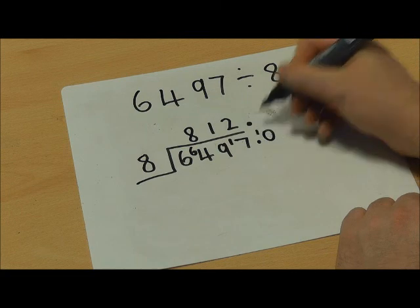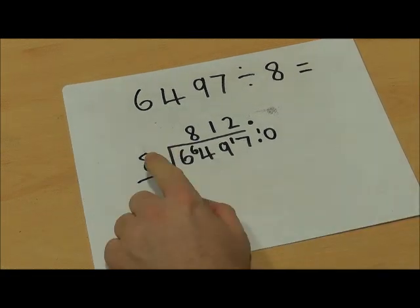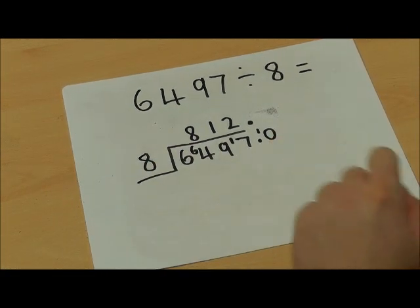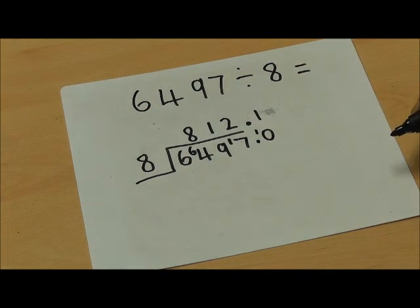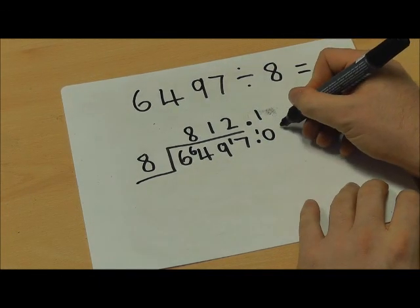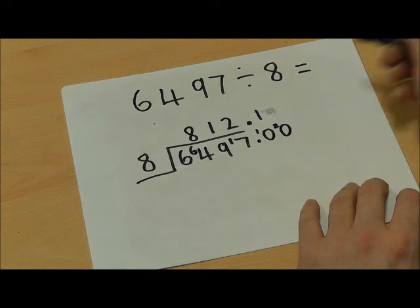Because the remainder was 1, I'm going to put that there. I'm now going to see how many times 8 goes into 10, which is 1, because 1 times 8 is 8. My remainder there is 2, so I'm going to use another 0 and put the 2 there.